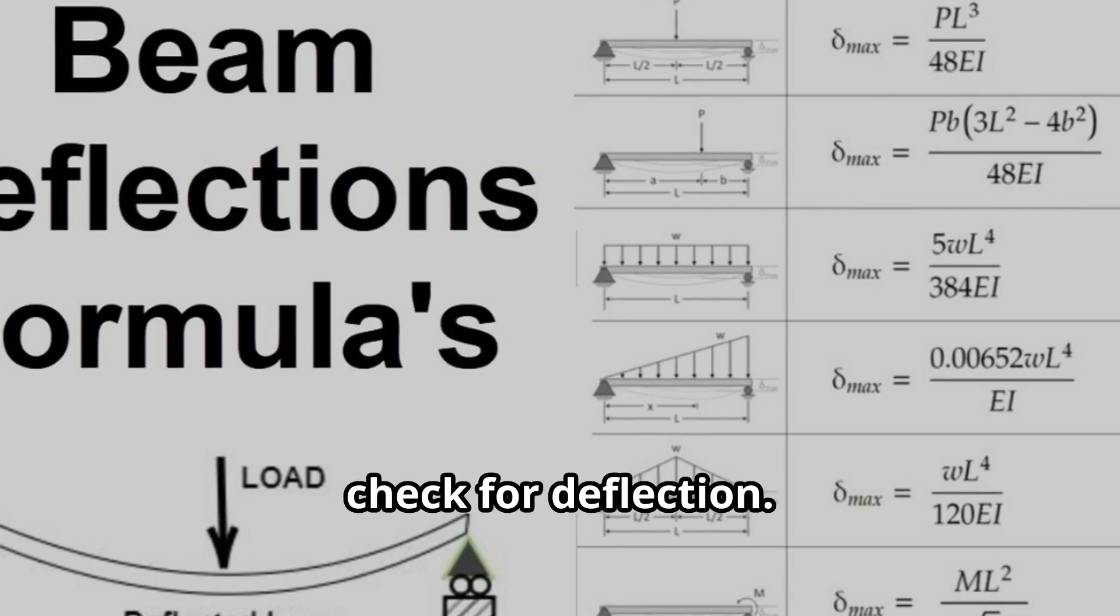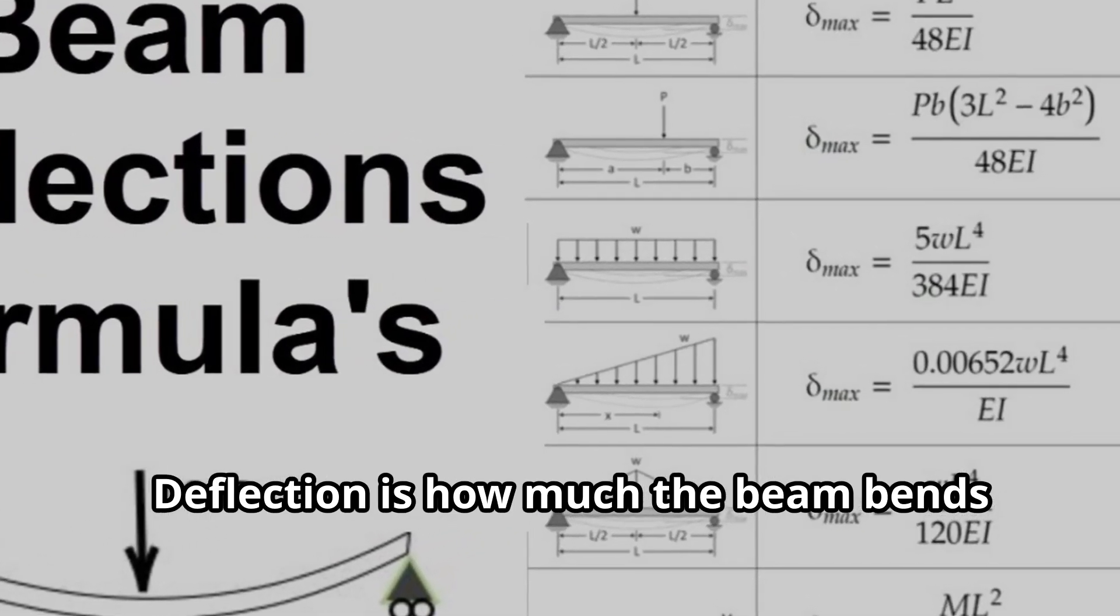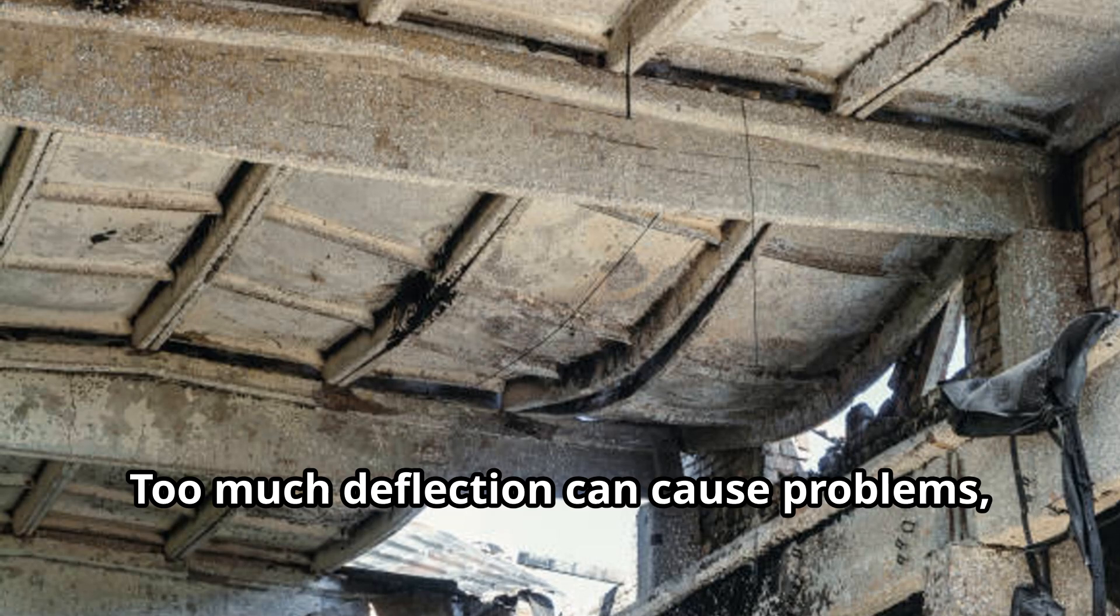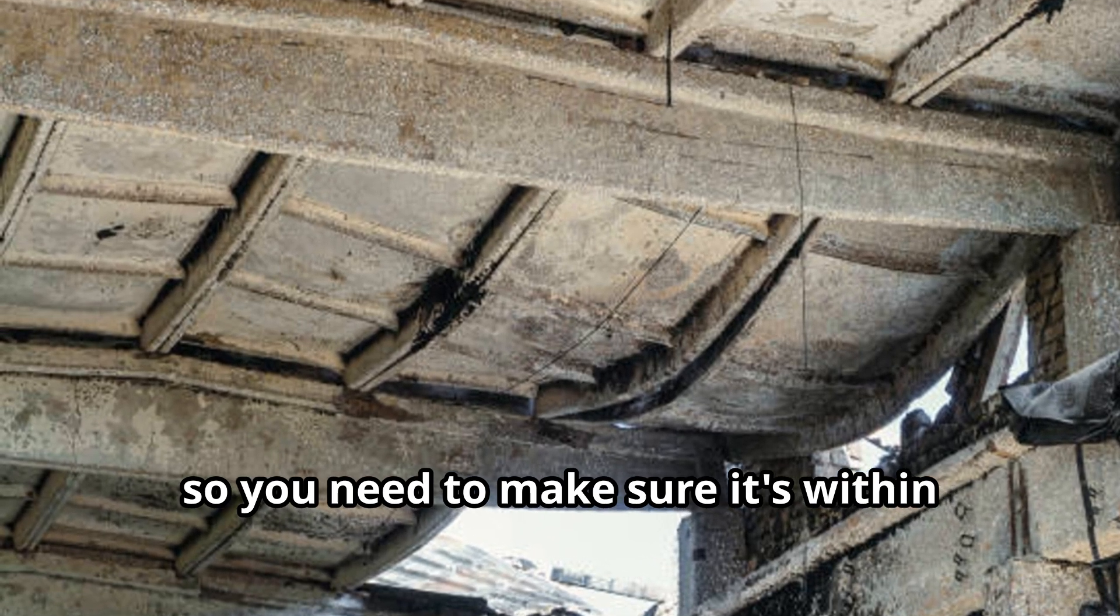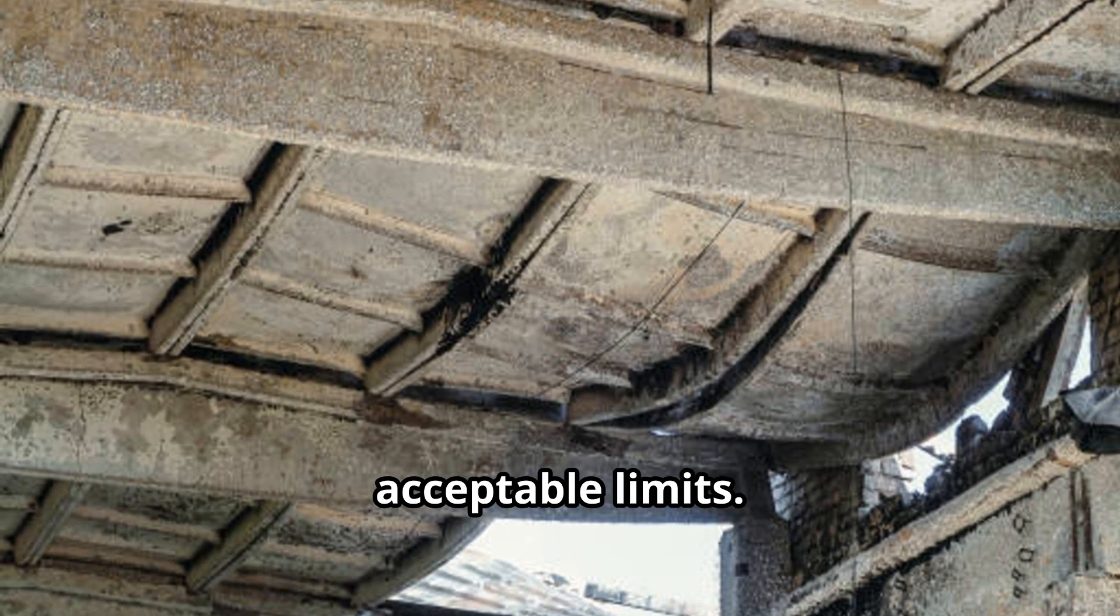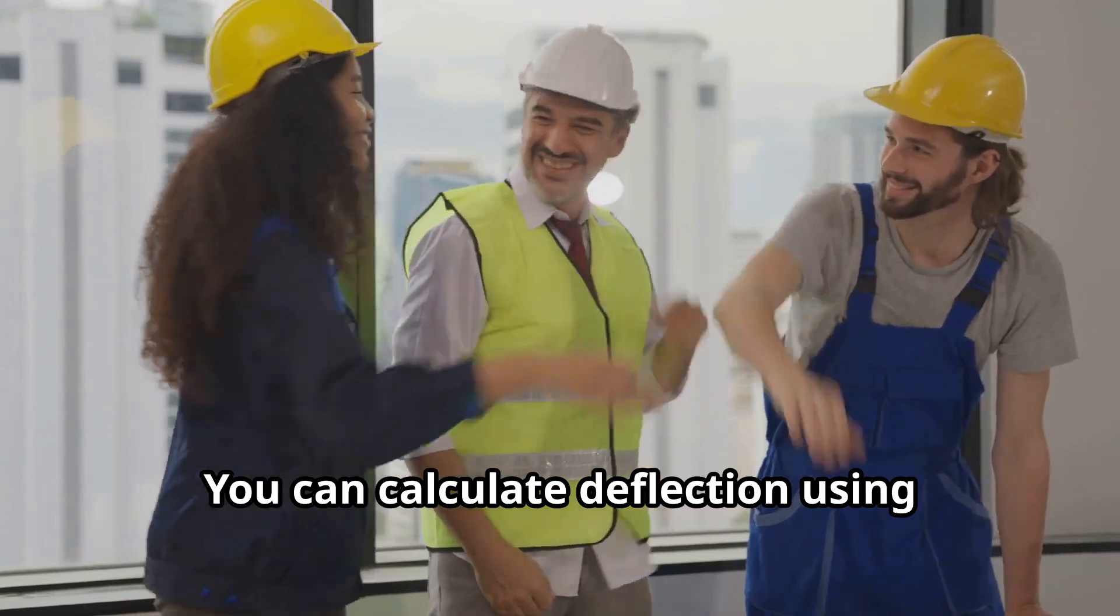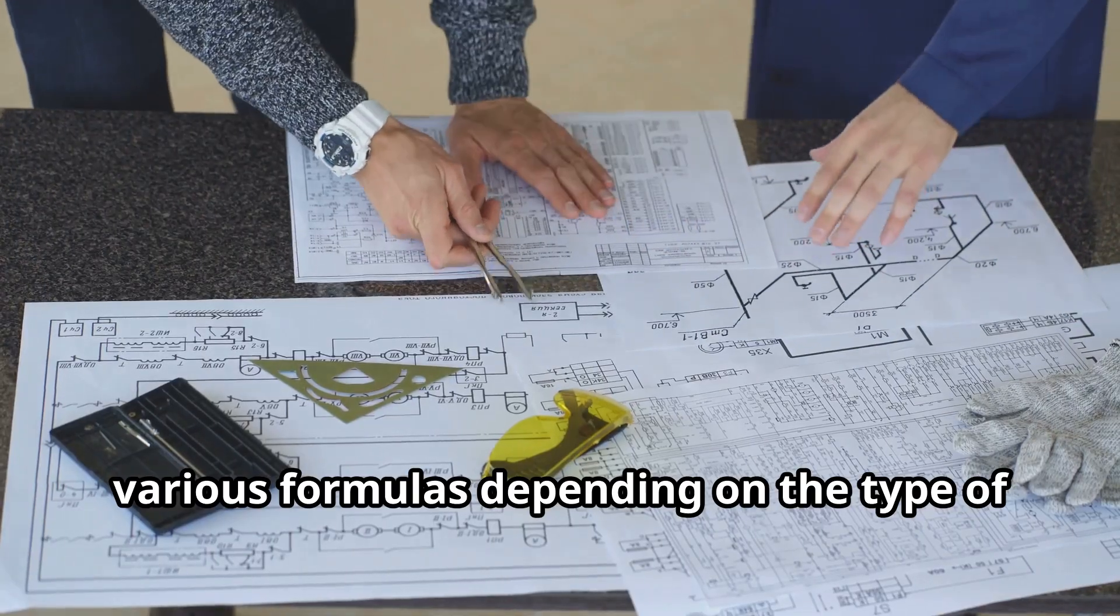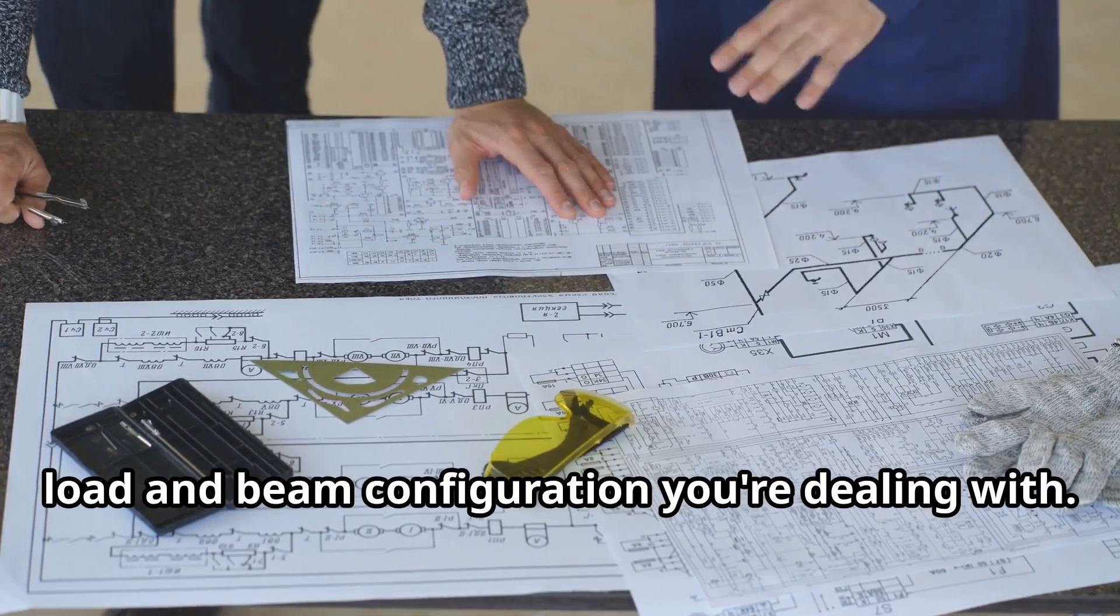Finally, check for deflection. Deflection is how much the beam bends under load. Too much deflection can cause problems, so you need to make sure it's within acceptable limits. You can calculate deflection using various formulas depending on the type of load and beam configuration you're dealing with.